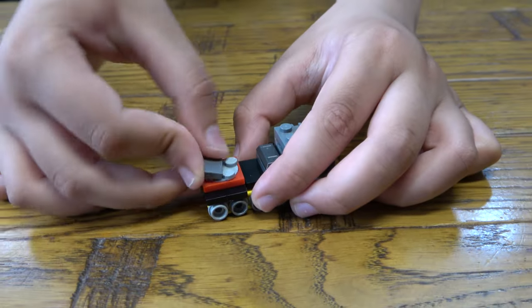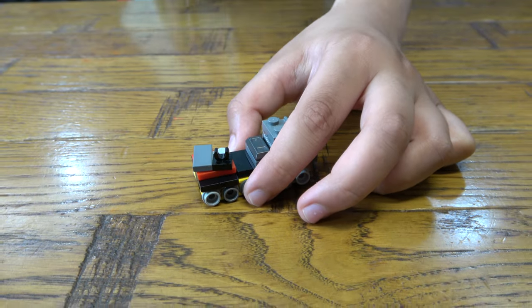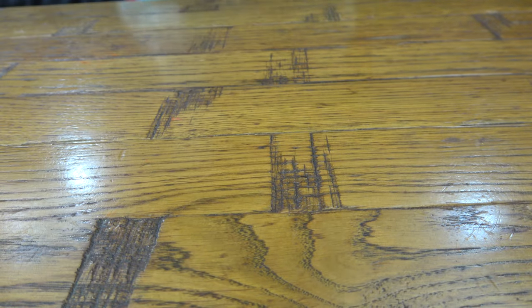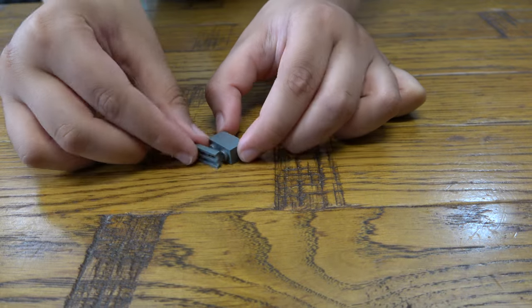Alright, first we're going to place that there, and two of those. Now I'm going to put it aside. First thing we're going to get one of those, get a gray piece.